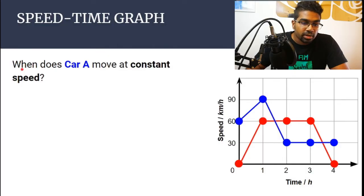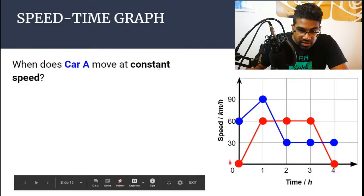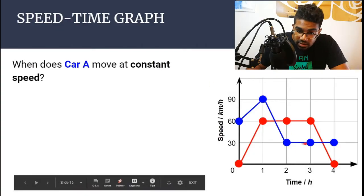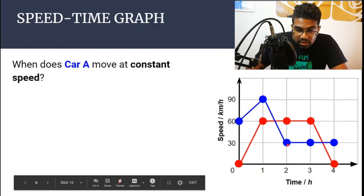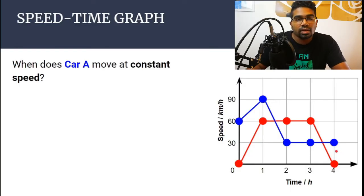This is another type of question — also a one-mark question. When does car A move at constant speed? Constant speed means the speed doesn't change. On a speed-time graph, when the speed doesn't change, we look at car A — the blue graph. The speed here doesn't change: it is 30 at 2 hours, at 3 hours, and at 4 hours. So during this whole time, the speed doesn't change. Another way to look at it: when the speed doesn't change, the acceleration is 0.